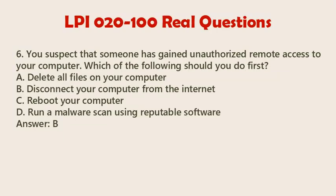Question 6. The correct answer is B: Disconnect your computer from the Internet. When you suspect unauthorized remote access to your computer, the first step is to prevent further unauthorized access by disconnecting your computer from the Internet. This action helps to cut off the potential attacker's access and prevents them from causing further harm or stealing more data.